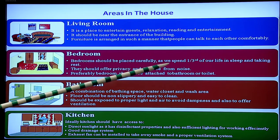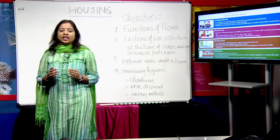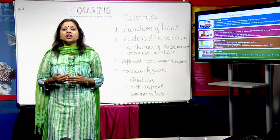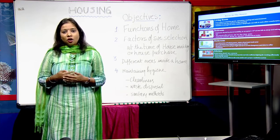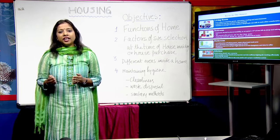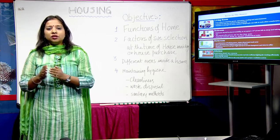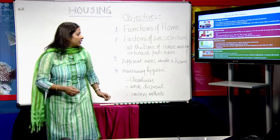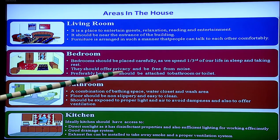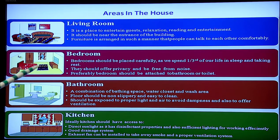The second area is the bedroom. As we spend one third of our life in sleep and rest, the bedroom — a private zone — should be placed carefully. It is where sleeping, relaxation, and private activities happen, so it should be far away from the living area to avoid noise disturbance from social gatherings. The bedroom should offer privacy, be free from noise, and preferably have an attached bathroom or toilet.